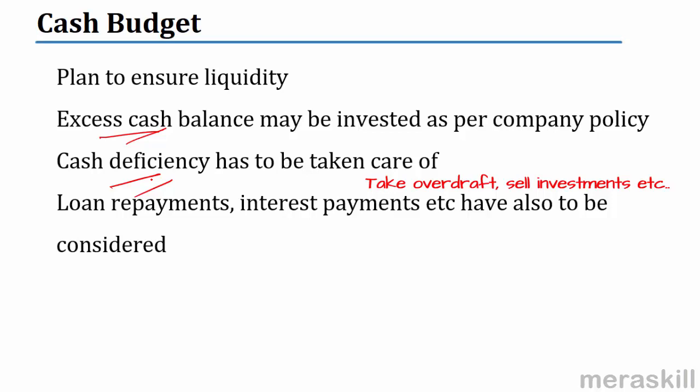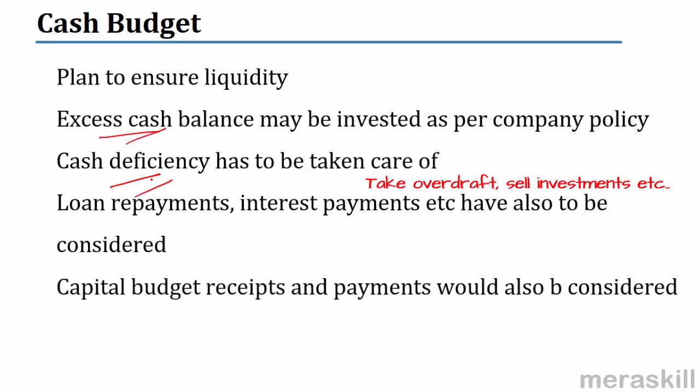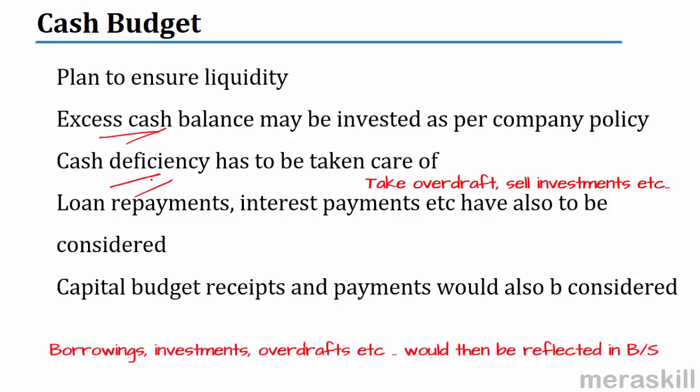The cash budget will also involve all kinds of loan repayments, interest payments, etc. Capital budget receipts and payments would also be considered. Borrowings, investments, overdrafts, etc., would then be reflected in the balance sheet. Just as in the capital budget, assets being purchased are reflected in the balance sheet, similarly the closing cash balance is also reflected. If we have taken borrowings, purchased investments, or taken overdraft facilities, all these would be reflected in the budgeted balance sheet.